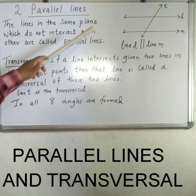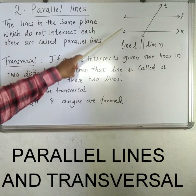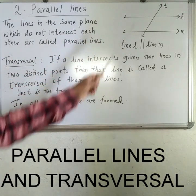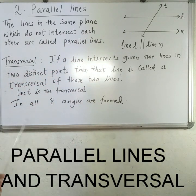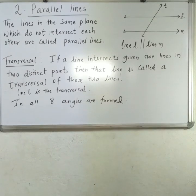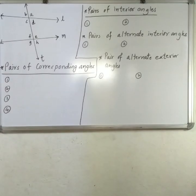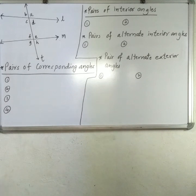Now, when a transversal intersects these two parallel lines, in all there are eight angles formed. In this diagram, line L and line M are the parallel lines, and line T is the transversal.